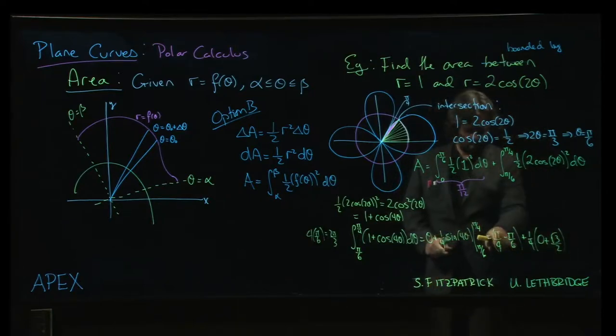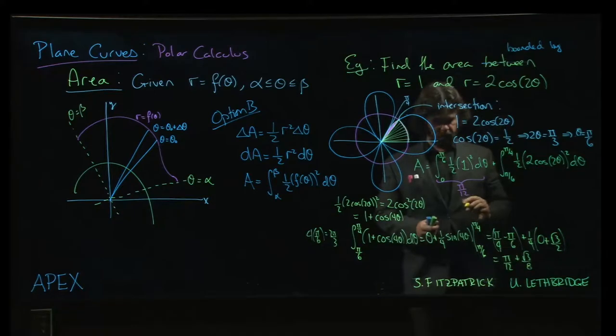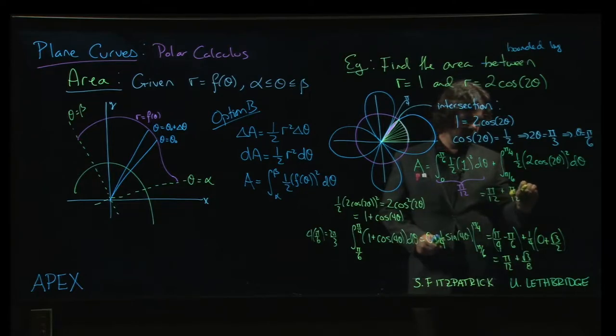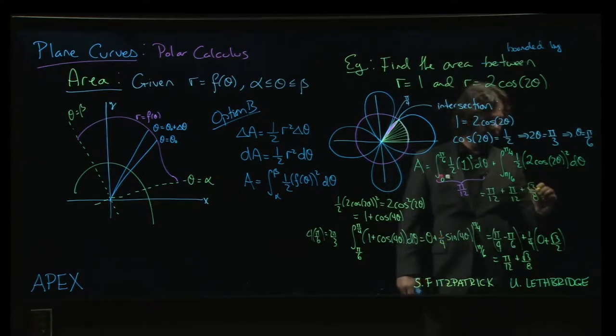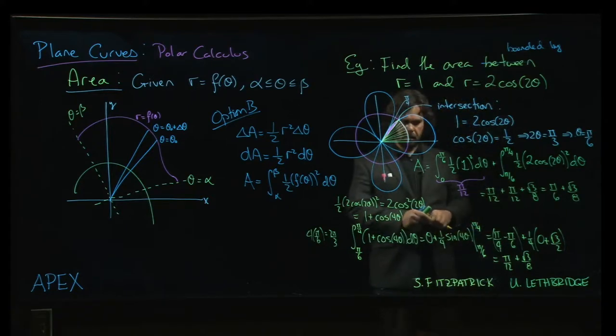So this is going to be... That's 3 pi over 12 minus 2 pi over 12. So that's pi over 12 plus, and multiply by the 1 quarter, root 3 over 8. Okay? So the whole thing here, we get pi over 12 plus pi over 12 plus root 3 over 8. And I guess we can maybe... Might as well do the one step. Simplify. Pi over 6 plus root 3 over 8. Okay. There we go.